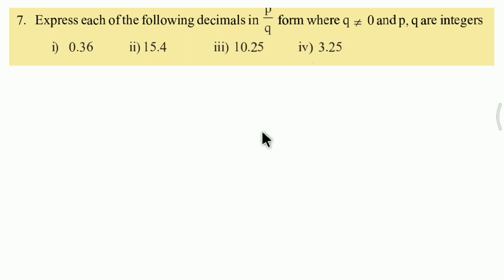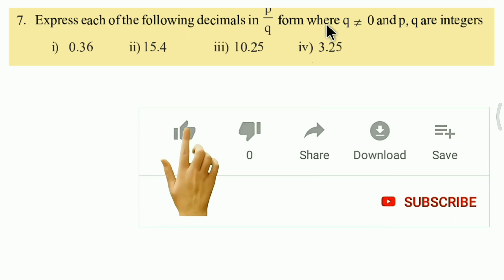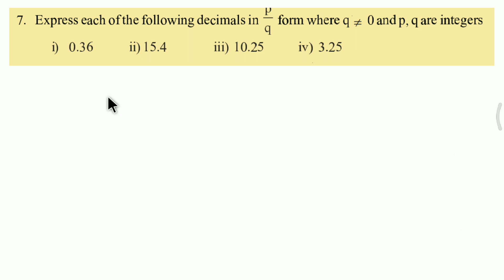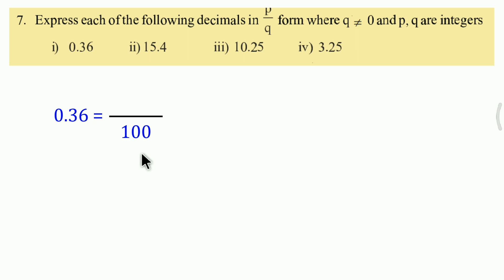Next, question 7. Express each of the following decimals in p by q form, where q is not equal to 0 and p, q are integers. We need to convert the given decimals into fraction form. First one: 0.36. After the decimal point, how many digits are there? 2 digits.